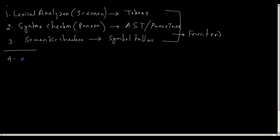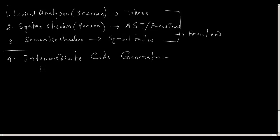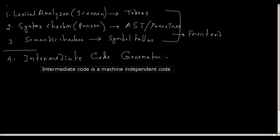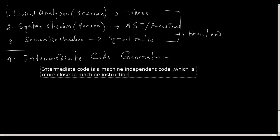The first part of the back end is the intermediate code generator. Intermediate code is what we call machine independent code, but its representation is more close to a machine instruction or assembly code. So intermediate code is a machine independent code which is more close to machine instruction. Different compiler designers use different kinds of intermediate code.